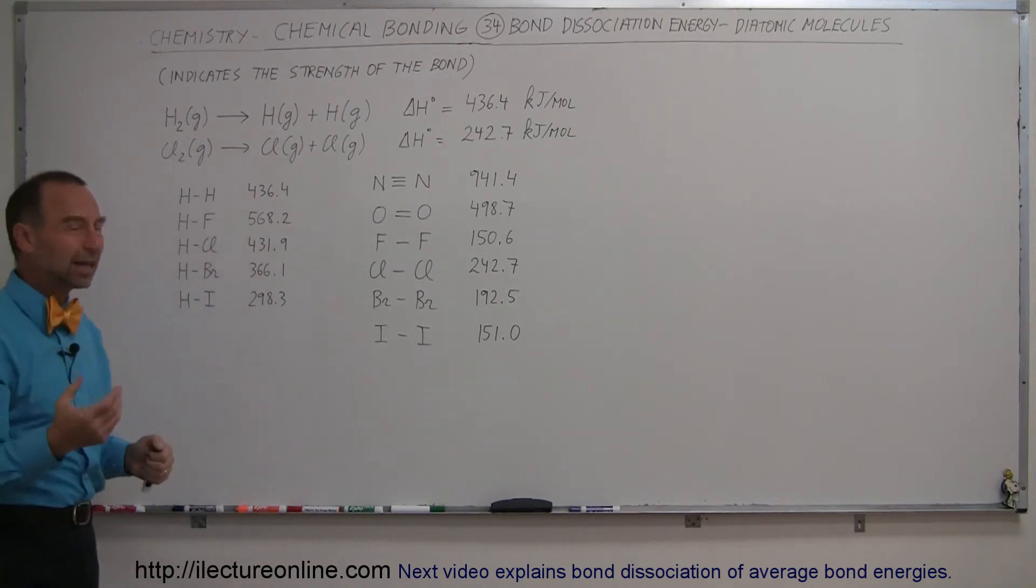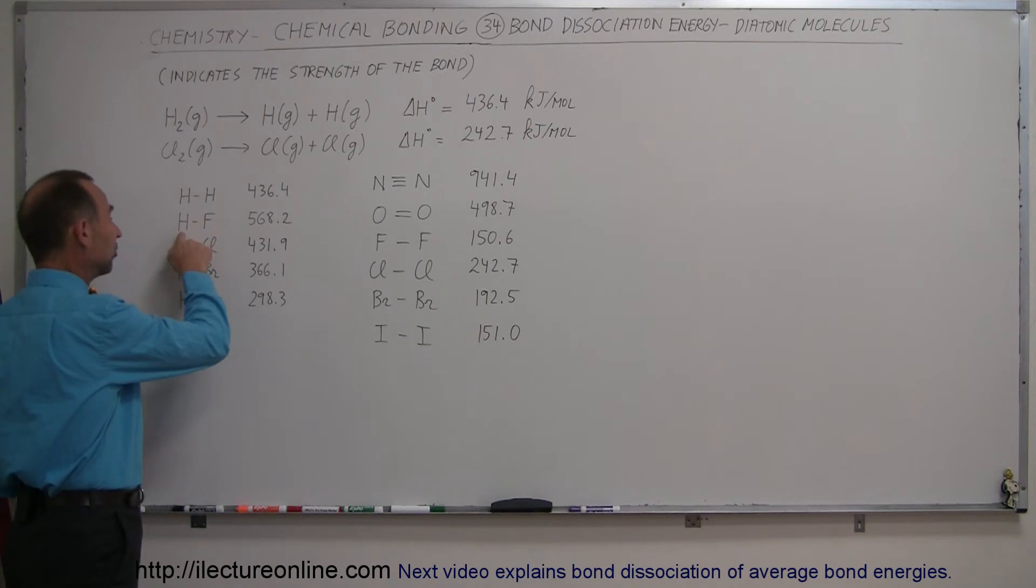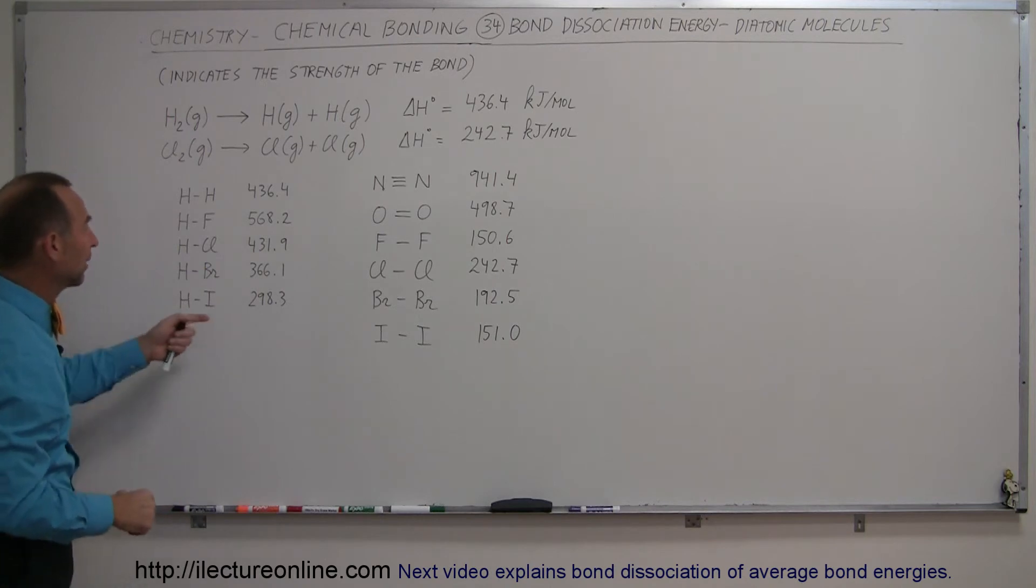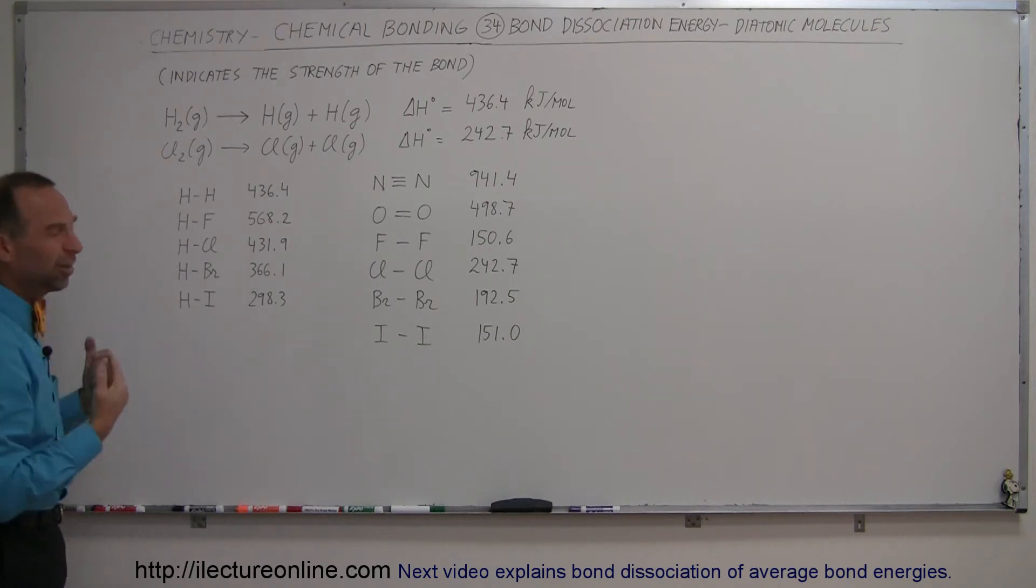Fluorine, of course, we know it's very electronegative. When fluorine bonds to hydrogen, it will release an enormous amount of energy, 568 kilojoules per mole, rather than just the hydrogen bonds. Hydrogen-fluorine bonds are harder to break than hydrogen-hydrogen bonds.